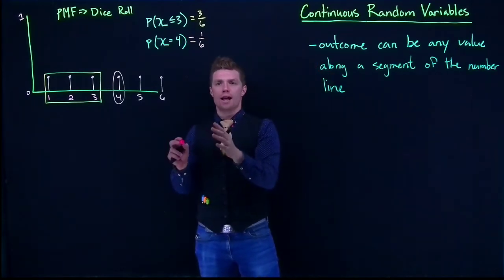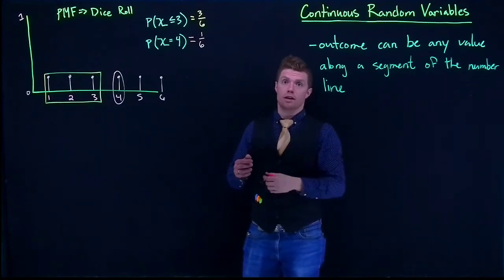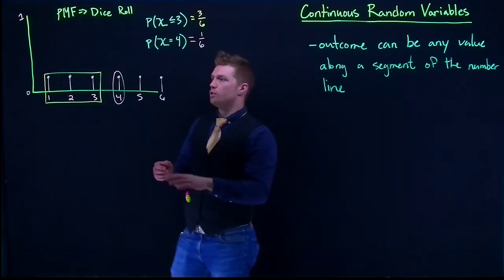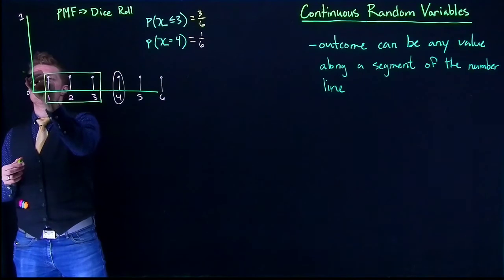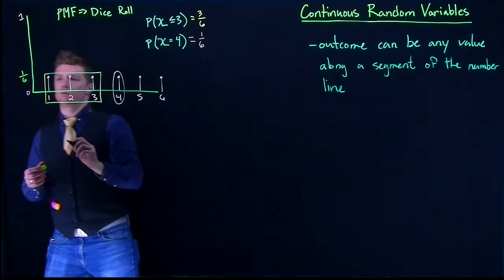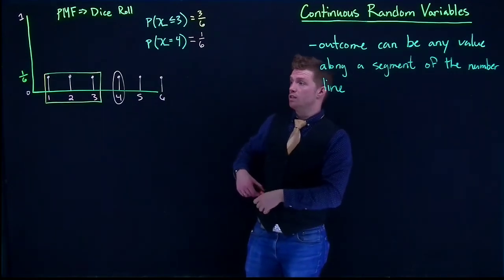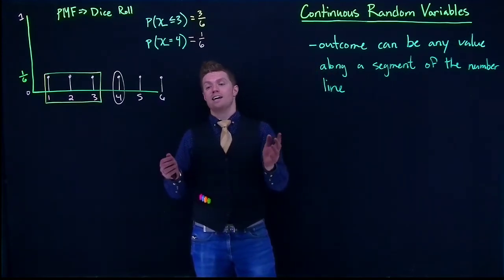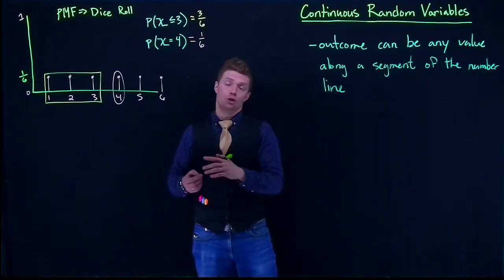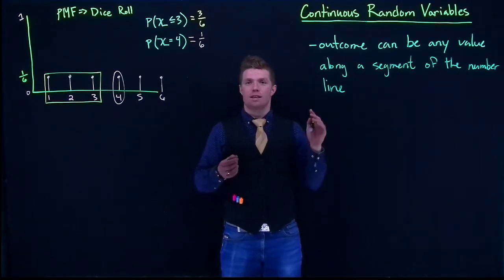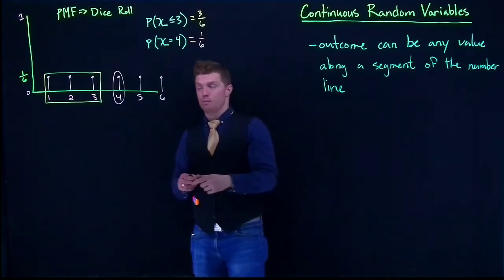Now let's contrast this to a uniform continuous random variable and see the similarities and differences. We'll keep the range the same, from 1 to 6. This time we'll use DMV wait times: when you show up, you're guaranteed to wait at least 1 hour, and it's uniformly distributed up to 6 hours — by 6 hours they guarantee you'll be fast-tracked out the door.